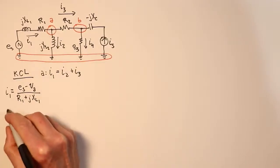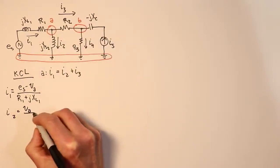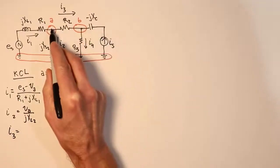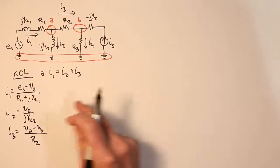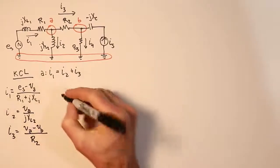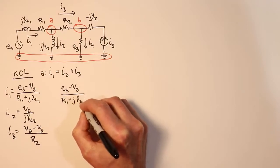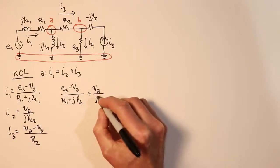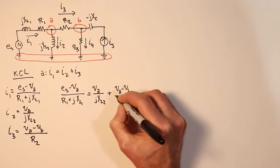Same thing I would do for I2. The current through this inductor is simply the voltage across the inductor, which is VA, node A to ground, divided by JXL2. And similarly, for current number three, flowing from node A to node B, we would say that's VA minus VB to get the voltage, the net voltage across that component, divided by that component R2.